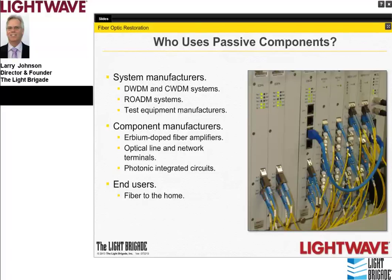Looking at who uses these components: component manufacturers use passive devices in products such as the Erbium-doped fiber amplifier, which uses isolators, WDMs, and attenuators internally. In fiber-to-the-home applications, OLTs and ONTs incorporate filters, WDMs, and attenuators. Newer technologies such as PICs—Photonic Integrated Circuits—perform multiple functions including arrayed waveguide components integrated with lasers and modulators, and MUX and DMUX functions, with goals of smaller sizes, lower power consumption, and greater optical integration.